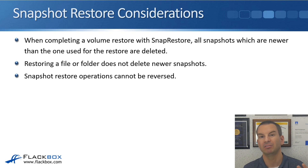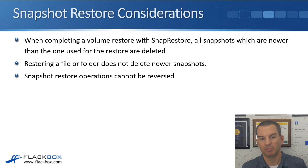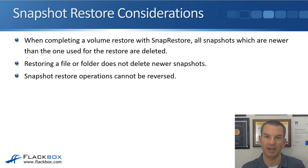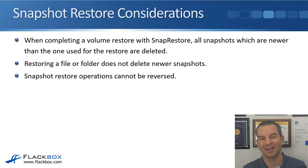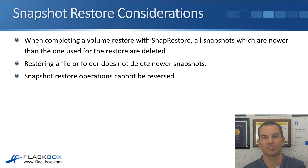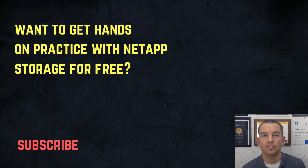If you restored a file or folder and there was a newer snapshot, you could still revert to the newer snapshot. But if there's no newer snapshot and you revert back to a snapshot, then what was in the active file system is gone — you're back to what was in the snapshot. Hopefully you have a backup. If you have no backup and no newer snapshot, then you've lost whatever had changed since that snapshot that you restored.